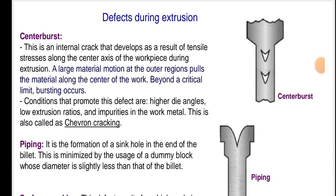Defects during extrusion: Center burst is an internal crack that develops as a result of tensile stresses along the center axis of the workpiece during extrusion. Large material motion at the outer regions pulls the material along the center beyond a critical limit and bursting occurs. Conditions that promote this defect are higher die angles, low extrusion ratios, and impurities in the work metal. This is also called chevron cracking.